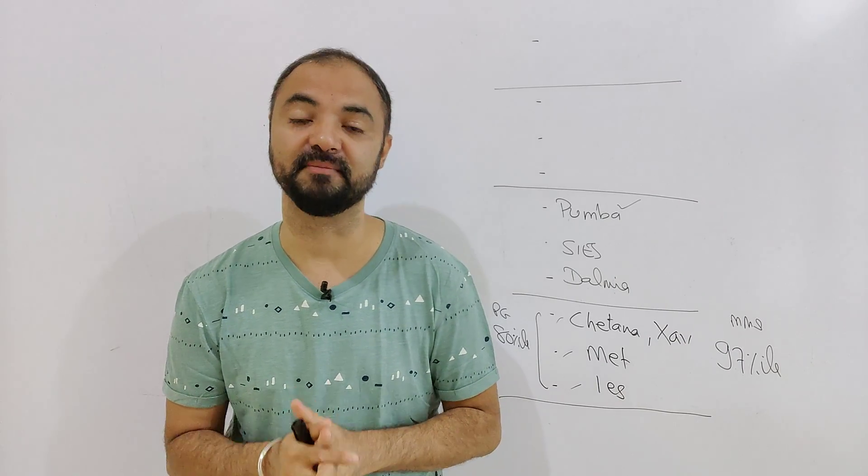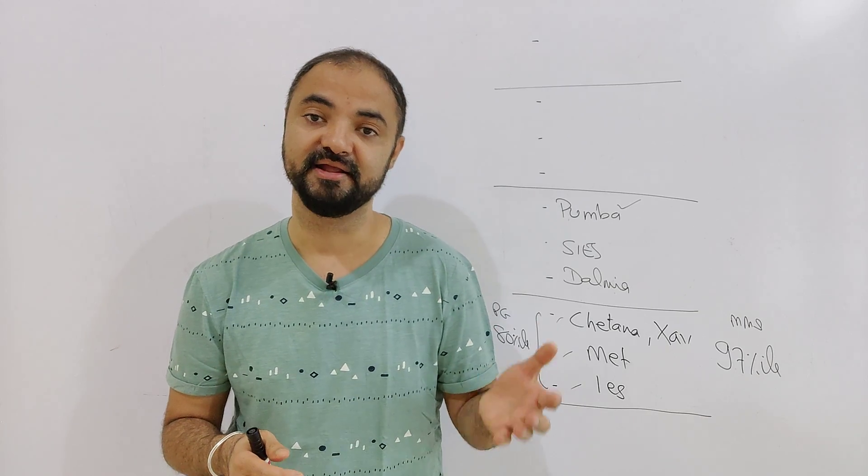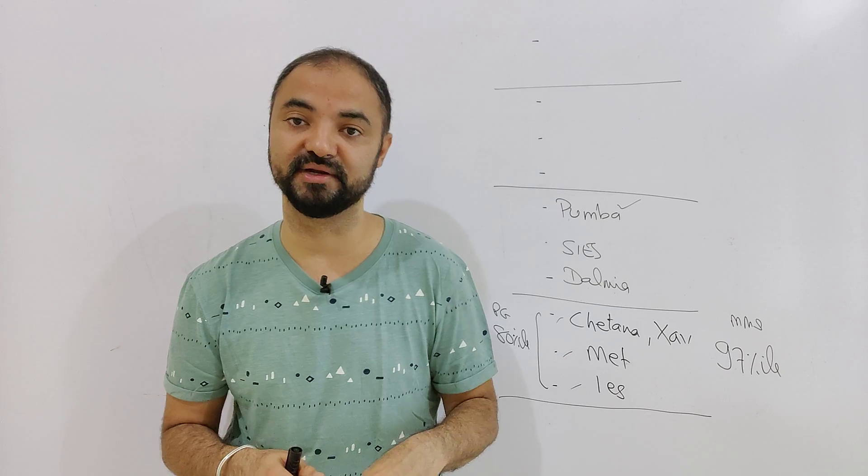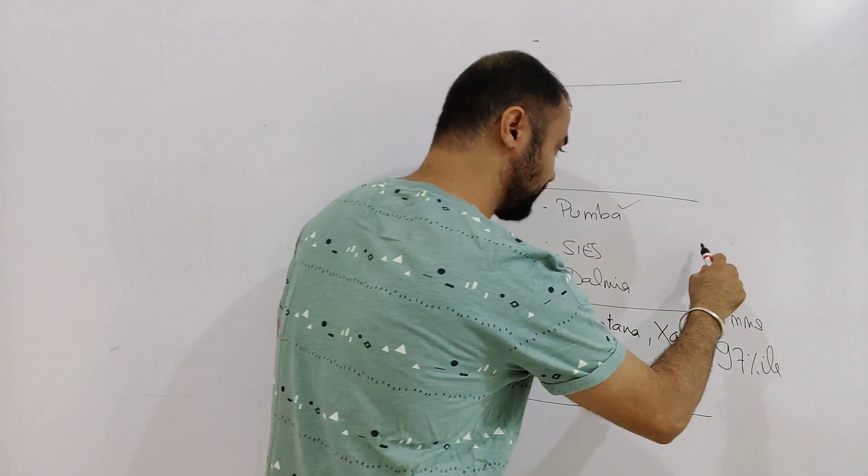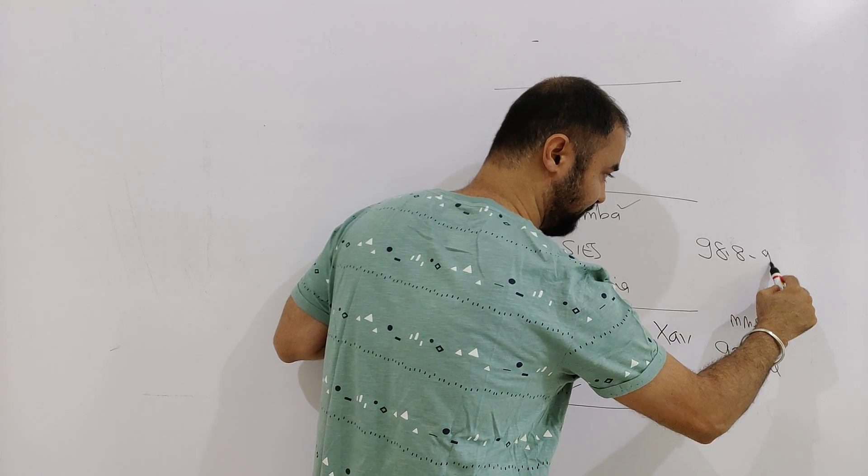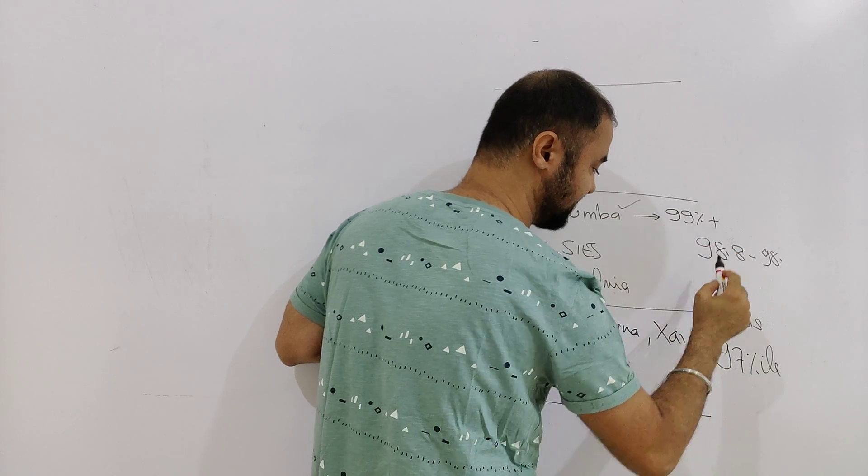So intake is almost 350 to 400. Because of 350, 400 intake, the placement obviously will take more time to get placed. Or you need to work really hard in the college to get the placement. So this is where Pumba comes into picture. Pumba will overtake, will obviously outshine the other B schools. For getting into these colleges, cutoff is around 98.8 percentile to 98.5 percentile.